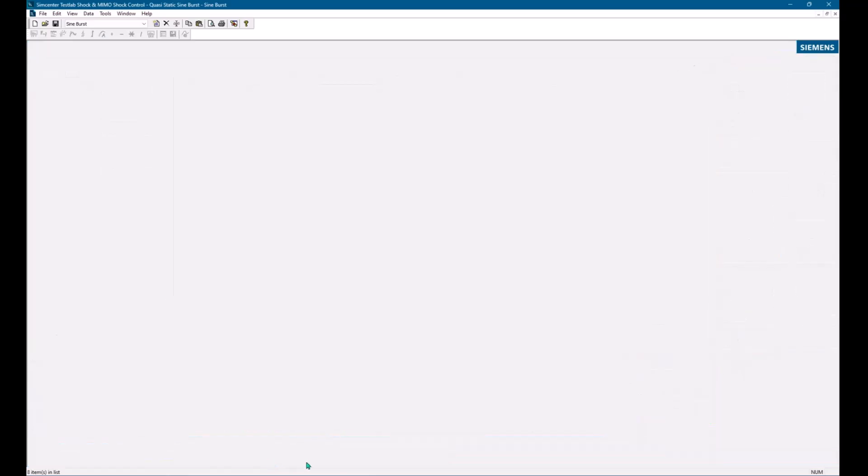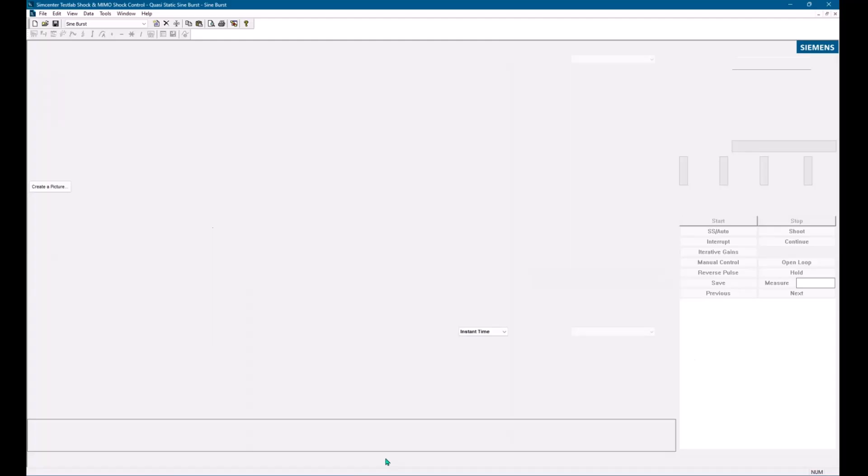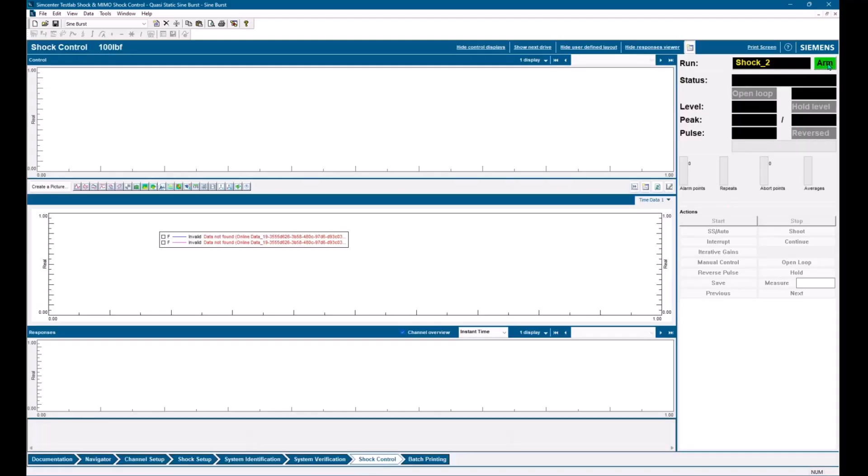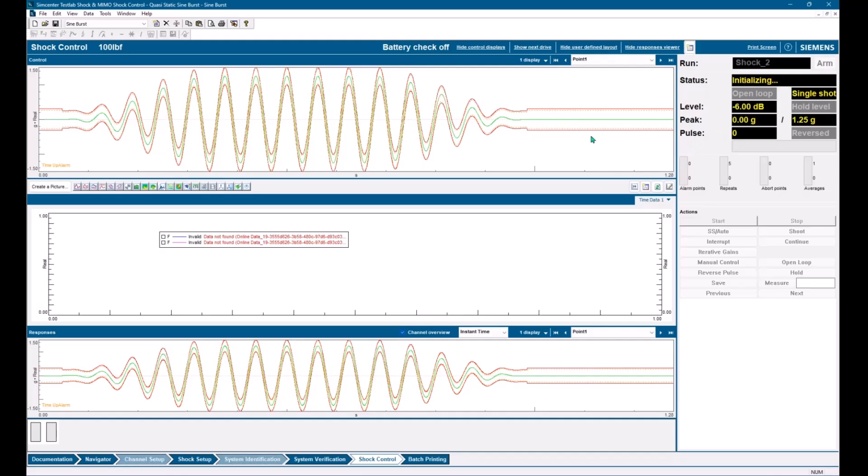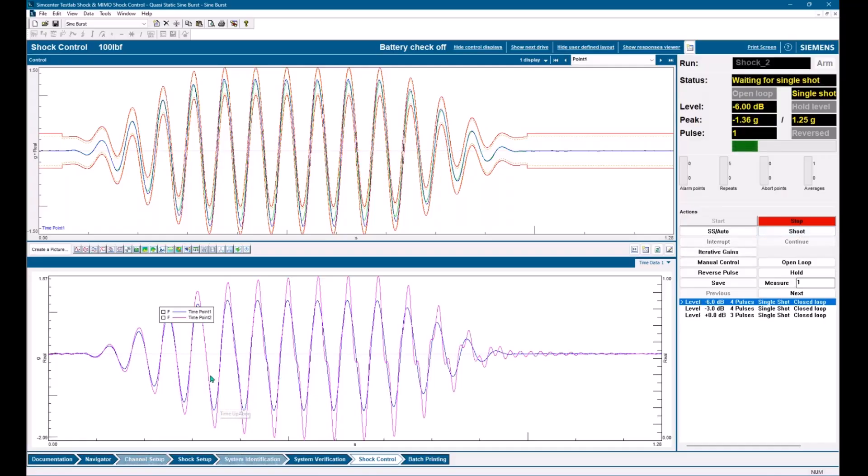All right. So we've done our system identification. And now we can go into shock control. I'm going to hit arm here. And we can see exactly how this is going to go. I'm just going to hit start. And then this is like a regular shock test. I have this set for manual control, so it's waiting for me to say shoot and send a pulse out. And down here in the bottom, we can see the blue is our control channel pulse, and the pink is our response. And you can see that it's pretty close, but maybe my frequency is still a little too high here.